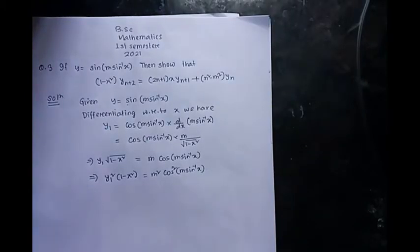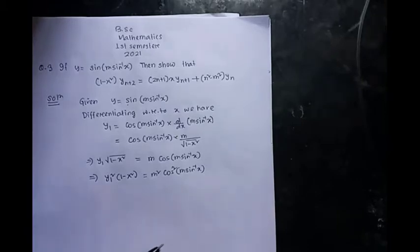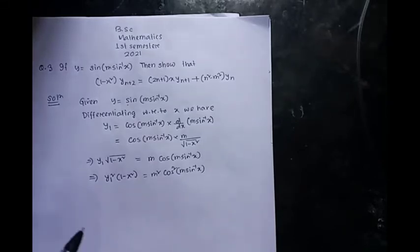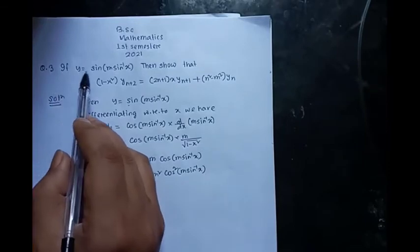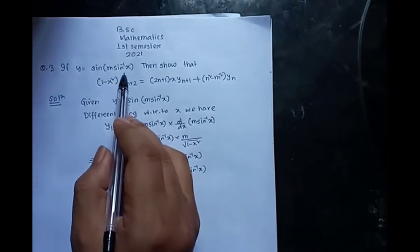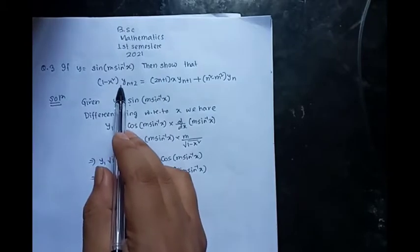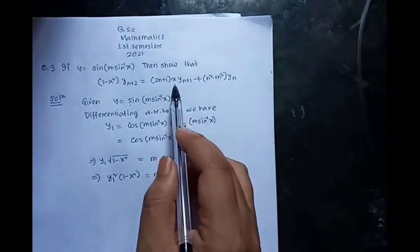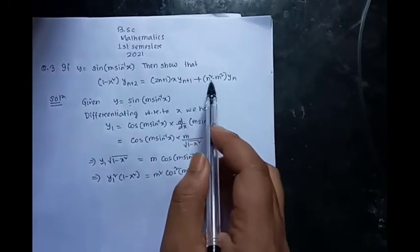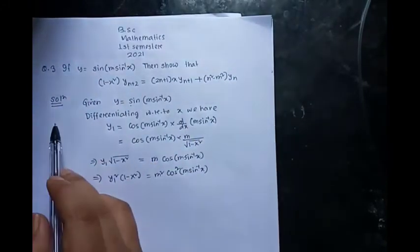Hello everyone, welcome to my YouTube channel. This video is for BSc first semester examination 2021. We will discuss a question from the mathematics paper one, that is calculus, question number three. The question says: if y equals sine of m times sine inverse x, then show that (1 minus x squared) y_(n+2) equals (2n+1)x·y_(n+1) plus (n squared minus m squared) times y_n. Look at the solution.